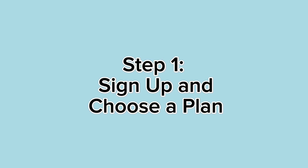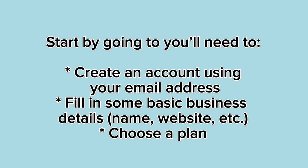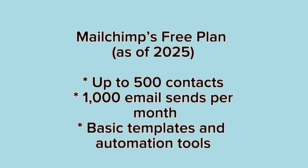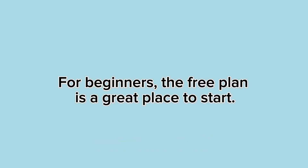Step 1: Sign up and choose a plan. Start by going to Mailchimp's website. You'll need to create an account using your email address, fill in some basic business details like name and website, and choose a plan. Mailchimp's free plan as of 2025 includes up to 500 contacts, 1,000 email sends per month, and basic templates and automation tools. For beginners, the free plan is a great place to start.